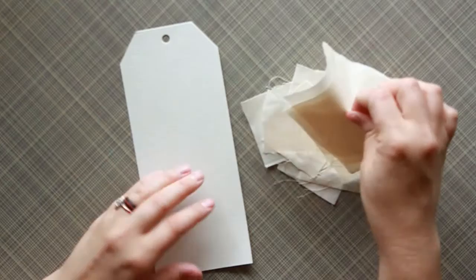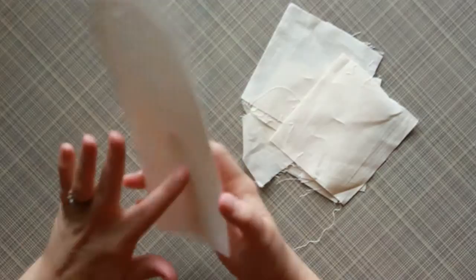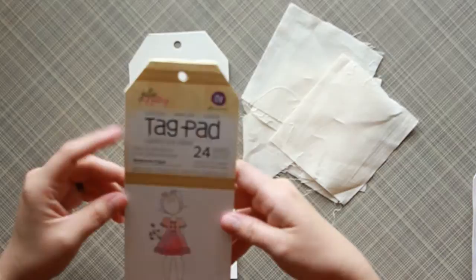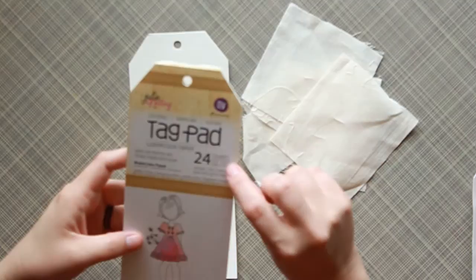So first thing I do is have your tag. I purchased this tag pad at Hobby Lobby and these tags are three and a half by eight and a half. You can always cut them down as far as length but it's a good width especially for mixed media projects.